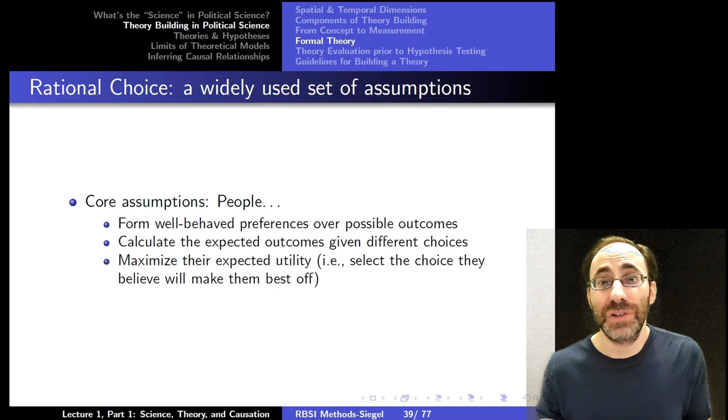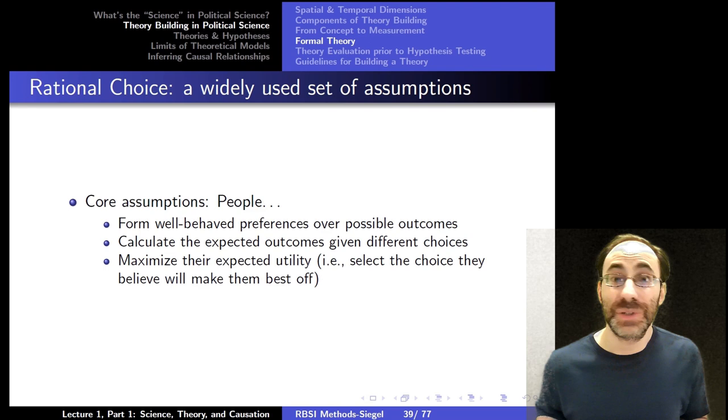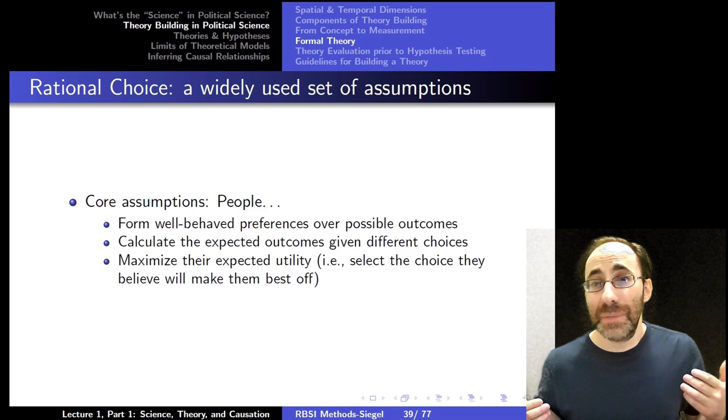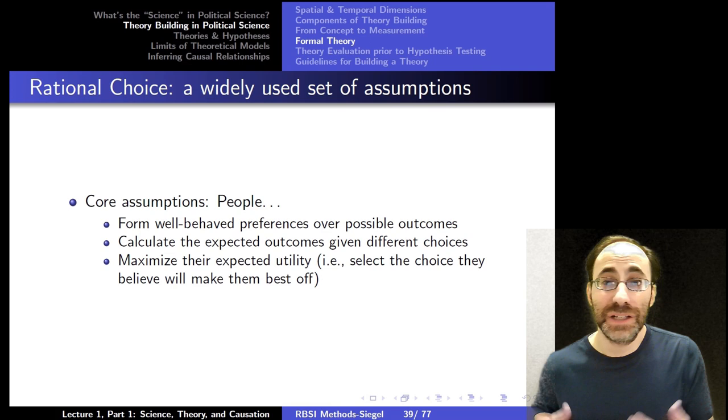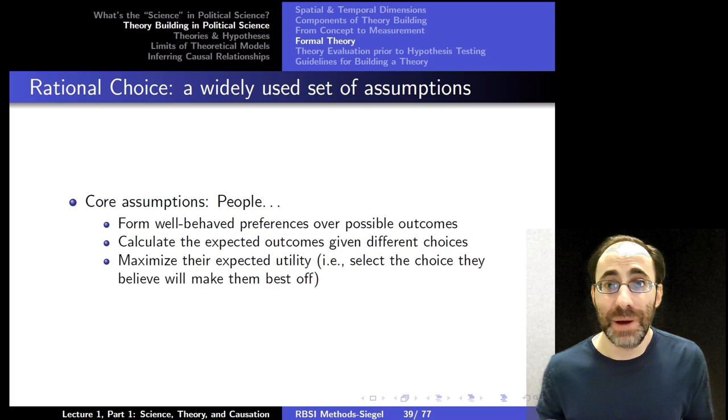Two, I can calculate the expected outcomes from different choices. So given a series of actions I can take, I can figure out what will happen when I take those actions. And three, and this is the rational part really, I can maximize my expected utility, which is to say I can select a choice that gives me the best outcome, that I think will give me the best outcome of all my possible outcomes.